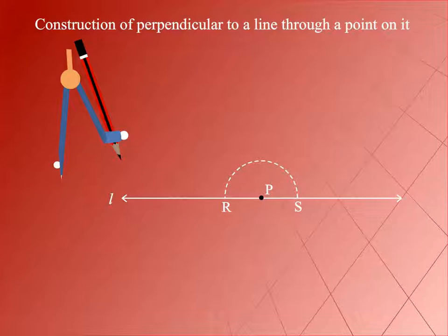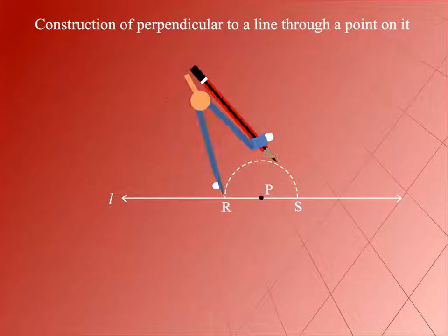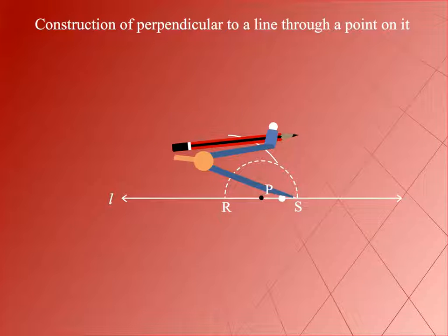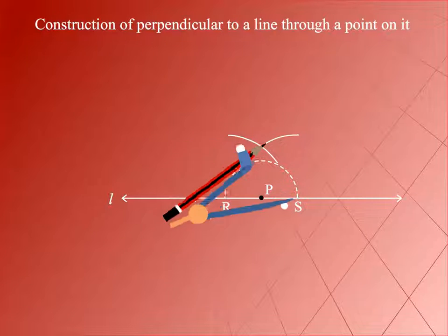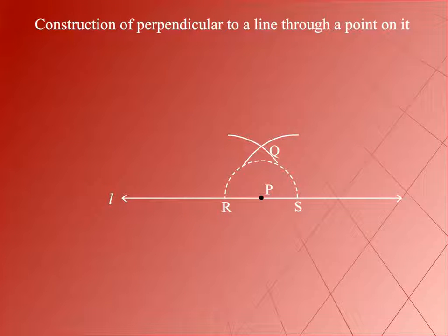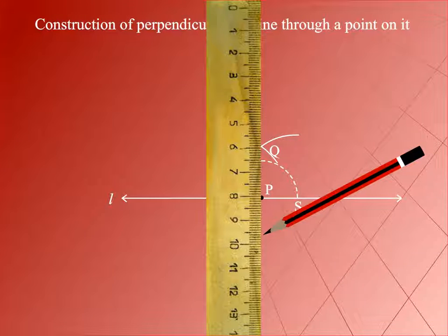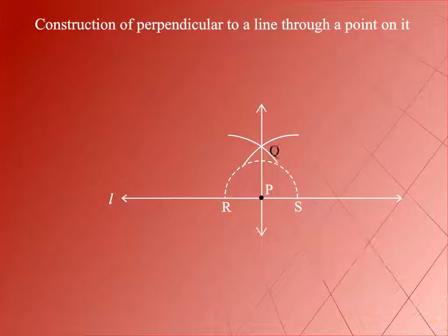With R as centre and any radius greater than half of RS, draw an arc as shown here. With centre S and the same radius, draw another arc cutting the arc drawn in the previous step at Q, as shown here. Join PQ and produce it in both directions to form the line PQ.